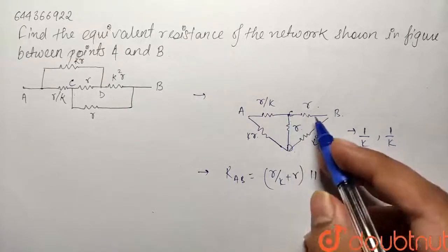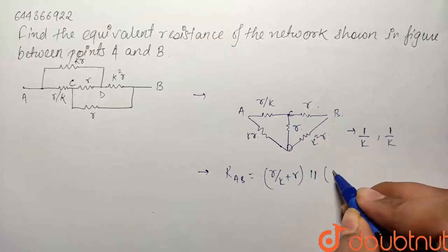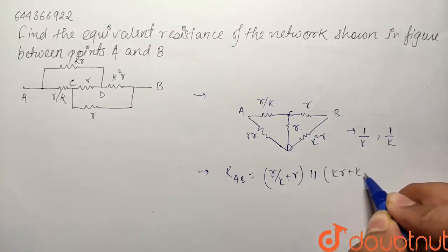So it will become the first two in series in parallel with the second two in series that is KR plus K square R.